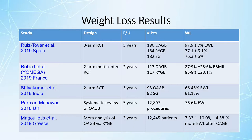One study compared sleeve gastrectomy and OAGB, showing 96% excess weight loss in OAGB versus 61% for sleeve. The systematic review by Parmar and Mahavar of 12,000 patients showed 76% excess weight loss overall. In the meta-analysis at three years with 12,000 patients, OAGB had 7.3% more excess weight loss compared to RYGB and sleeve. Across all studies, weight loss in OAGB is consistently superior.